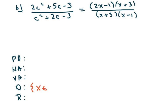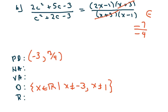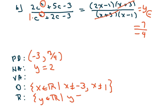The domain is all real numbers, but x cannot be negative three and x cannot be one. We do have a point of discontinuity at x equals negative three. Plugging negative three into the depressed equation, I get negative seven over negative four, which is seven-fourths for y. The horizontal asymptote: the degrees are the same, so divide the lead coefficients — y equals two. That means the range is all real numbers but y cannot be two. The vertical asymptote is at x equals one.